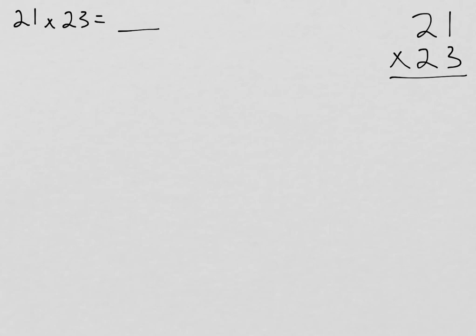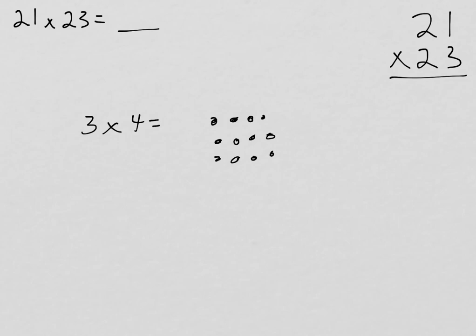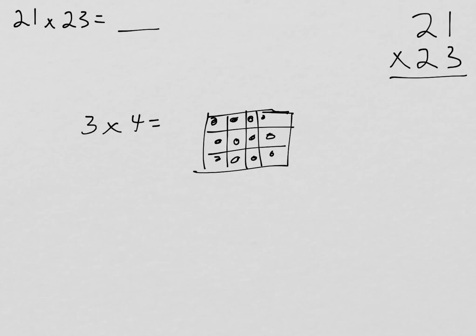An area model is really just a rectangular array. So let's use a really easy example to make sure that we all know what we're talking about. If I try to solve 3 times 4 — this is a beginning of 3rd grade kind of problem — I could draw 3 groups of 4, and I would see there that there are 12. If I made this rectangular and thought about each spot as a box, I could find the area of this rectangle. A 3 by 4 rectangle is going to have an area of 12, just like there were 12 objects in the array.